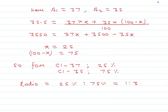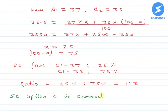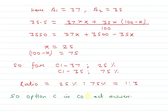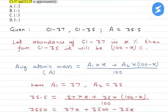Option C में 1:3 दिया गया है, so option C is the correct answer for this question. The ratio of Cl-37 to Cl-35 is 1:3. I hope the explanation was clear. Thank you.